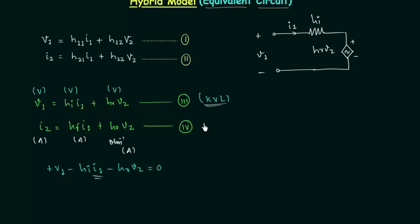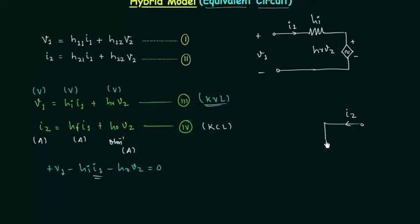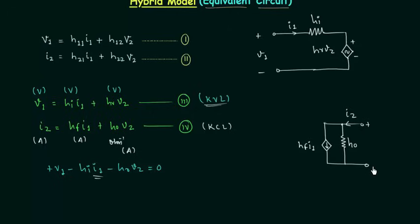I2 is the entering current, and the other two are leaving currents. We have a current source of magnitude HF·I1 (where HF is the forward current gain and I1 is the input current). There is also a branch with admittance HO, and the voltage across it is V2. This is the circuit obtained from Equation 4.